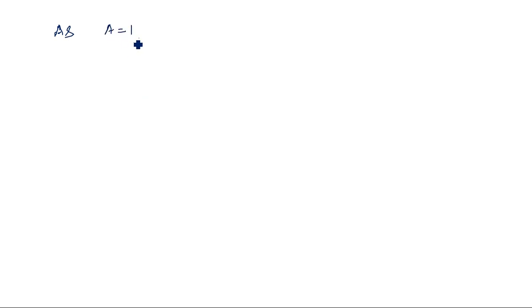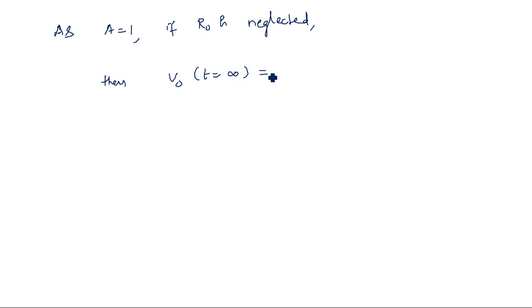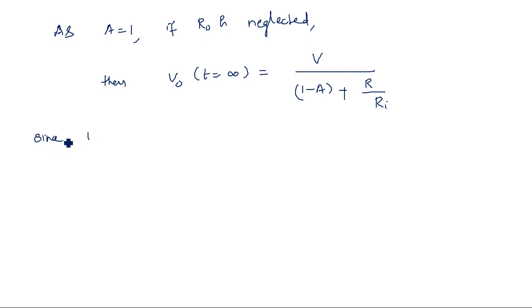The gain A of this network equals 1. If R0 is neglected — since R0 is very, very small compared to the remaining resistors — then v0 at t equal to infinity equals V divided by (1 minus A) plus R divided by Ri. Since R0 is very small, v0 at t equal to 0 can be neglected compared to v0 at t equal to infinity, because the open-circuit voltage is greater than the short-circuit voltage.